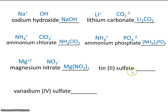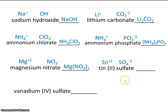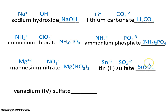For tin(II) sulfate, the 2 tells us the charge on tin, not how many tin atoms we have. Sulfate is SO₄ minus 2. Since tin has a charge of plus 2 and sulfate is minus 2, these 2s cancel. In an ionic compound, the formula represents a ratio, so 2 to 2 reduces to 1 to 1, giving us 1 tin and 1 sulfate.